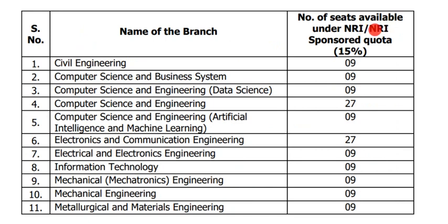Continuing non-NRI seats: Information Technology — 9, Mechanical Engineering — 9, Metallurgical and Materials Engineering — 9. For NRI Sponsored quota (15%), seats are: Civil Engineering — 9, Computer Science and Business Systems — 9, CSE with Data Science — 9, Computer Science and Engineering — 27, CSE with AI and ML — 9, Electronics and Communication — 9, Electrical Engineering — 9, IT — 9, Mechanical with Mechatronics — 9, Mechanical Engineering — 9, Metallurgical and Materials Engineering — 9.